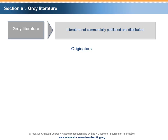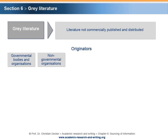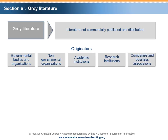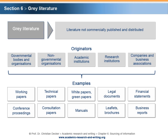Typical originators of gray literature are governmental or non-governmental bodies and organizations, academic and research institutions, as well as companies and business associations. Examples of gray literature are, amongst others, working papers, conference proceedings, technical papers, consultation papers, white papers, green papers, manuals, legal documents, leaflets, brochures, financial statements, and business reports.